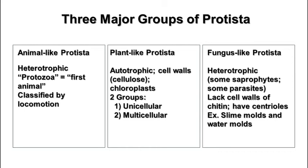The third group is the fungus-like Protista. They're also heterotrophic. Some of them are saprophytes and some are parasites. Saprophytes means that they live on dead or decaying material, and like fungi, they secrete enzymes to digest or break down their surroundings and then absorb the nutrients. They do not have cell walls made of chitin like fungi do, but they do have centrioles. Examples of these are slime molds and water molds.